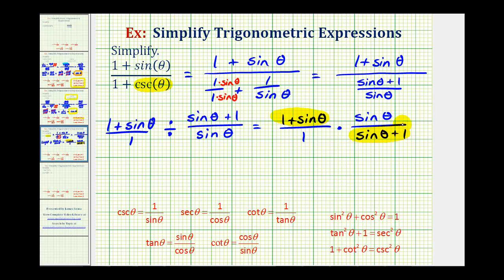If we wanted to, we could change the order here. This is the same as one plus sine theta. Therefore, this simplifies to one over one, leaving us with one factor of sine theta, which means our expression simplifies to sine theta.